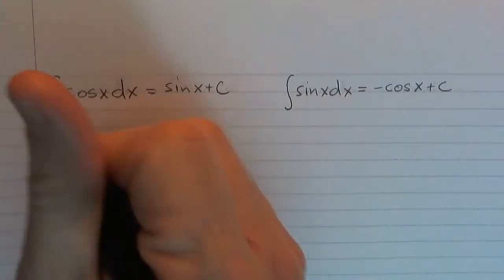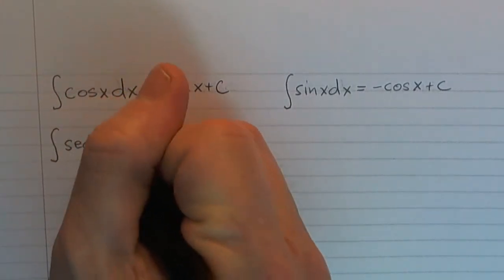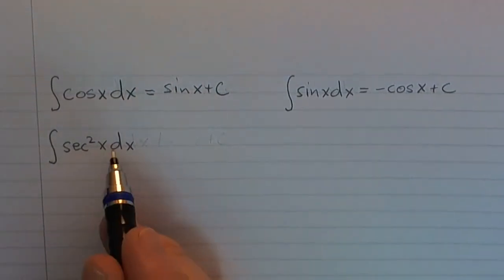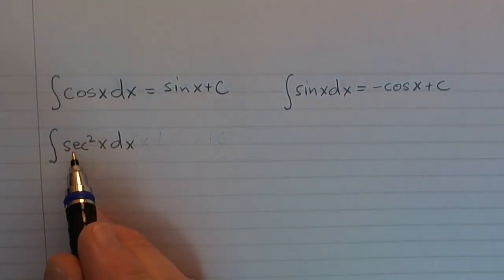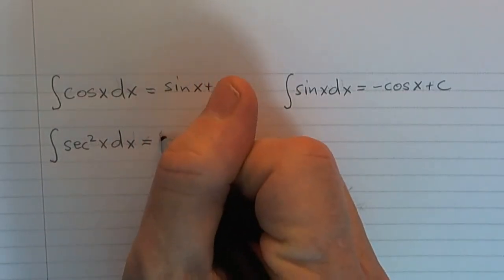Now let's think about secant squared. Remember, the derivative of tangent is secant squared. So if we see the antiderivative of secant squared, that's going to be tangent.